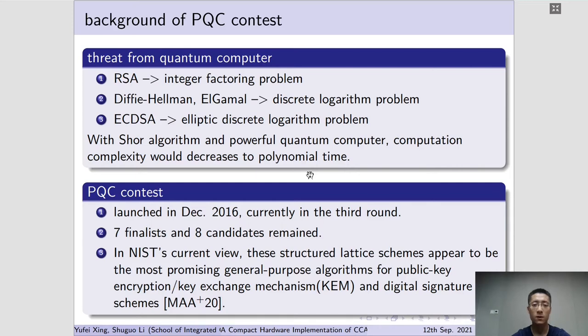As a result, NIST launched a contest of new post-quantum cryptographic schemes and called for proposals from all the world in December 2016, and there are 7 finalists and 8 candidates remained in the third round of contest. In NIST's current view, structured lattice appears to be the most promising ones.